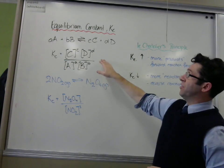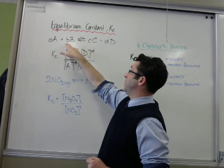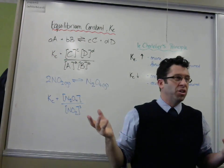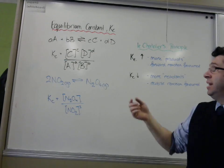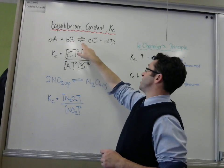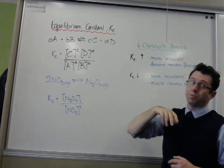What this is saying though, just quickly, is a moles of capital A plus b moles of capital B, so whatever molecules or ions or whatever they might be, are in an equilibrium system with c moles of capital C plus d moles of capital D.